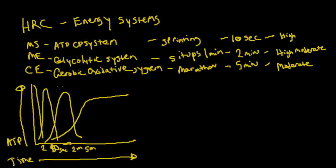For example, if we start a run: we run off the immediate energy source for the first two seconds, then the ATP-CP system kicks in, then once it fatigues the glycolytic energy system kicks in, until the aerobic oxidative energy system can supply enough ATP to keep us going. This links the health related components to energy systems. When you test muscle strength in pre-testing, you're essentially testing the ATP-PC system — also called the CP system, where CP means creatine phosphate and PC means phosphocreatine.